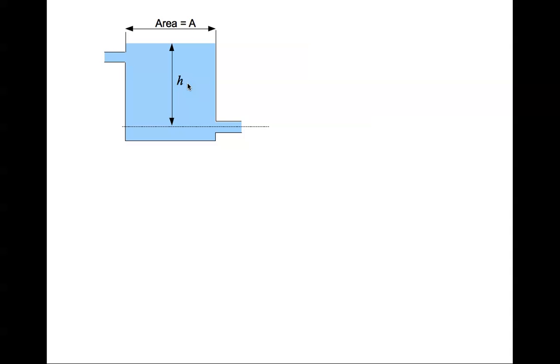Based on this we can write an equation for the mass of the water column. M equal to rho HA. H times A is the volume. Volume times the density rho is the mass.